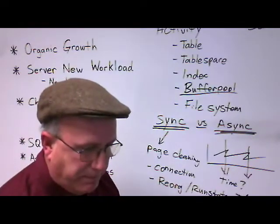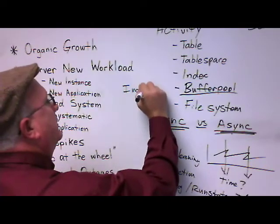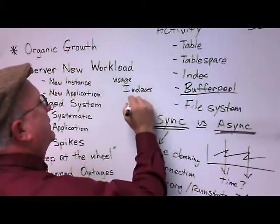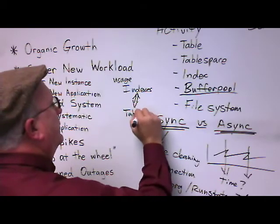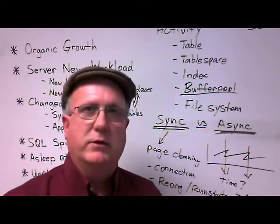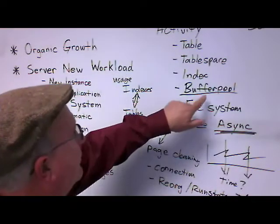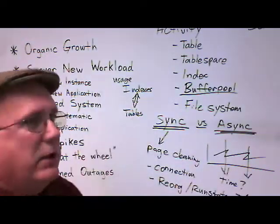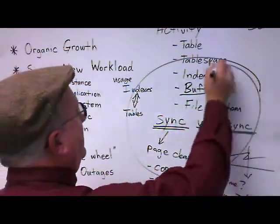I also want to look at indexes and their usage, comparing index usage to the tables they work with. What we're looking for is a feel for how indexes are being used relative to those tables. This is going to correlate back to buffer pools, and also to synchronous and asynchronous operations — specifically, we're looking for tablespace scans.